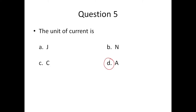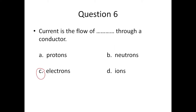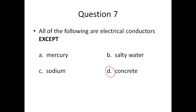Number five: the unit of current is the ampere. Question six: current is the flow of electrons — the answer is C. Question seven: the answer is D, concrete. All the rest — A, B, and C — have mobile electrons or mobile ions.